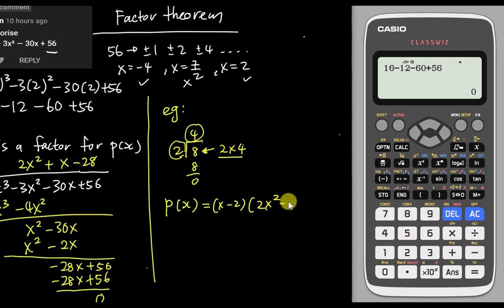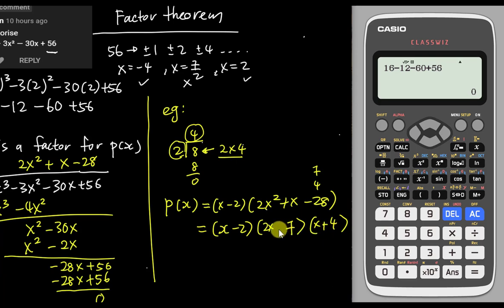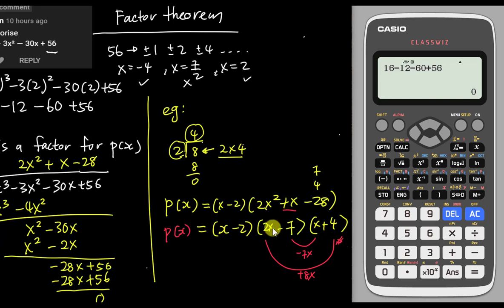Now I'll further factorize the quadratic 2x² plus x minus 28. I use 2x and x as factors. For 28, I'll try 7 multiplied by 4. Placing 4 and 7 accordingly: 2x times 4 gives positive 8x, and x times negative 7 gives negative 7x. So 8x minus 7x gives positive 1x — that works. The final factorized form is p(x) equals (x minus 2)(2x minus 7)(x plus 4).